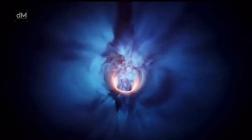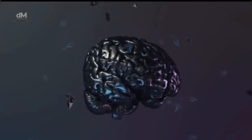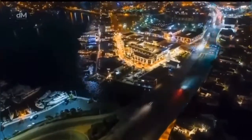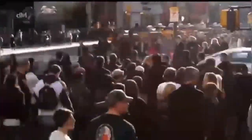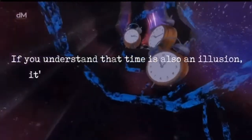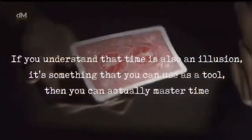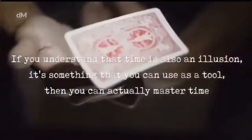We've been given this functional arrow of time which puts us in one specific direction so that we can organize our thoughts and our days and years and weeks, so we have this ability to coordinate and collaborate with each other. However, if you understand that time is also an illusion, it's something that you can use as a tool, then you can actually master time and maximize what you're doing on this planet.